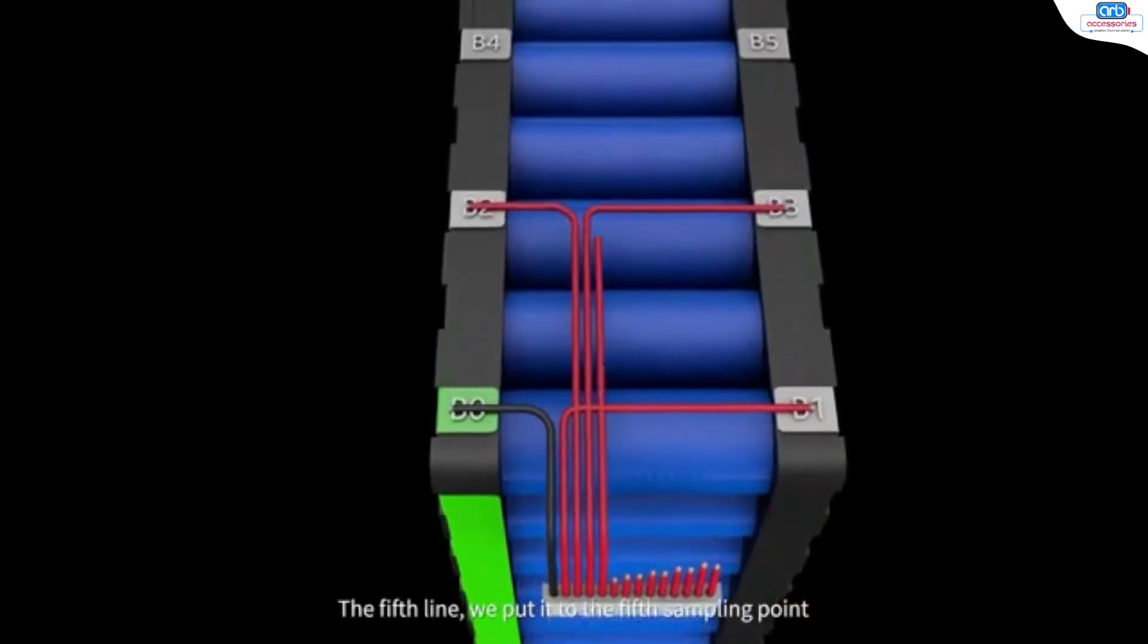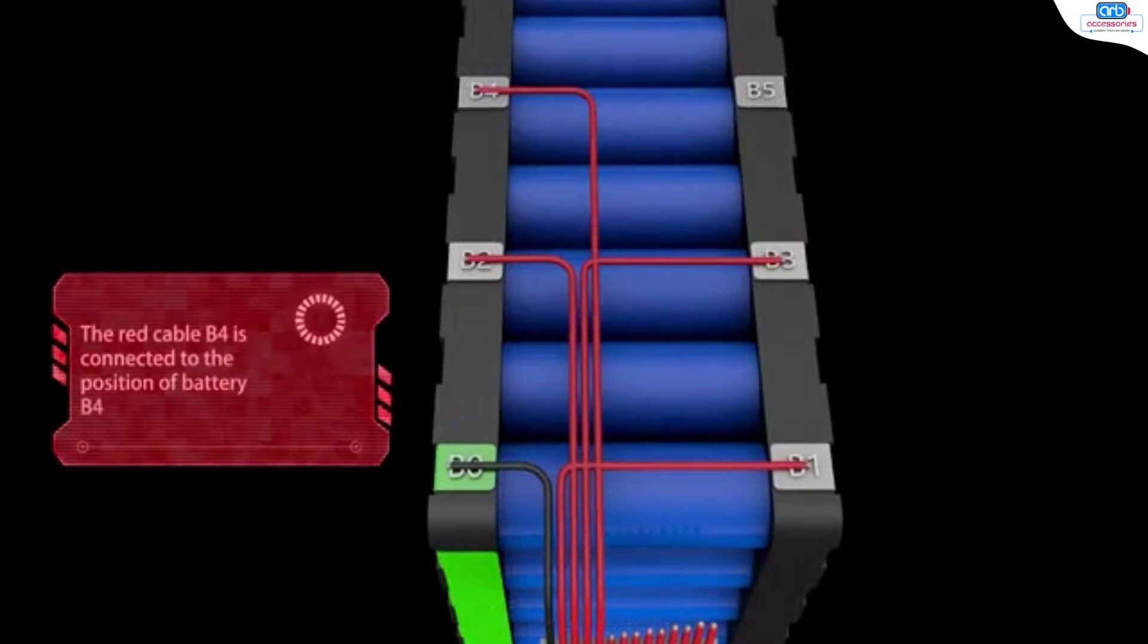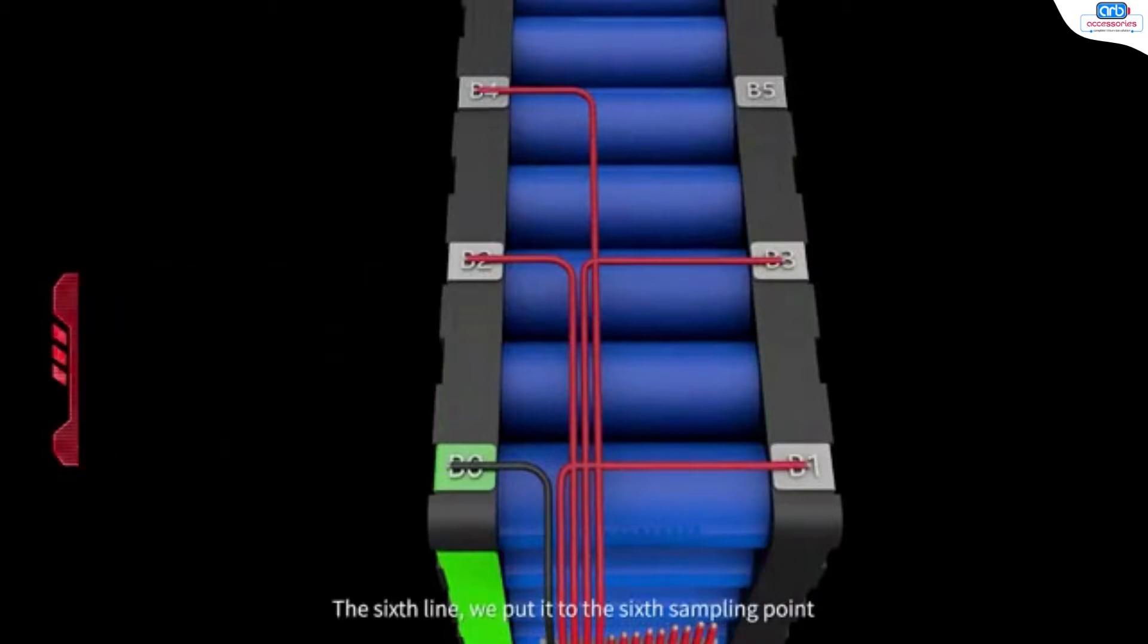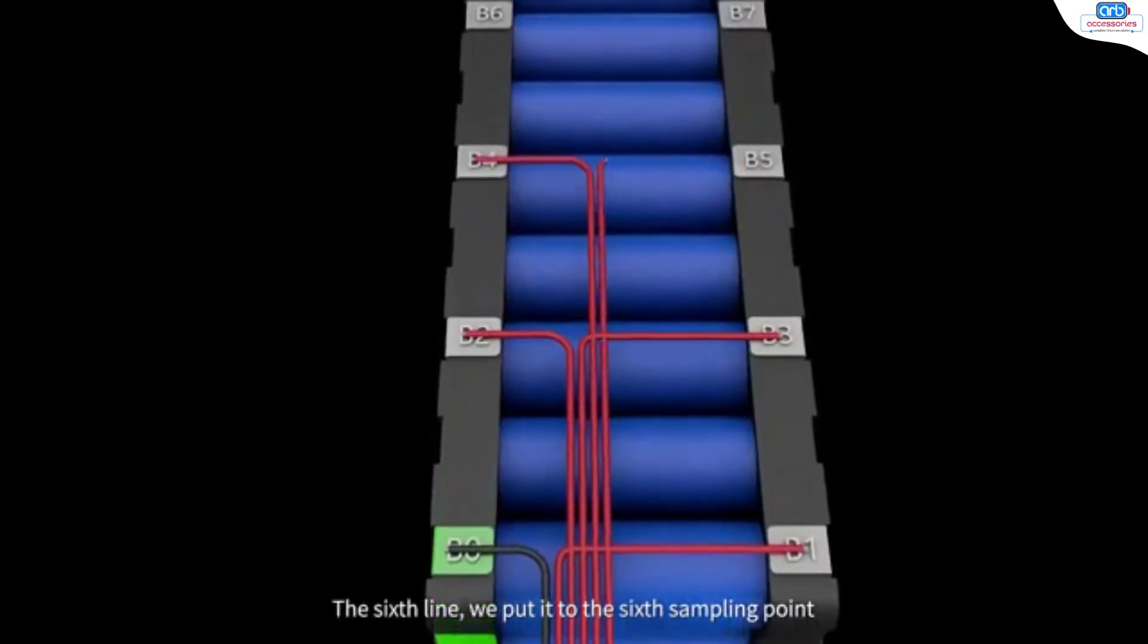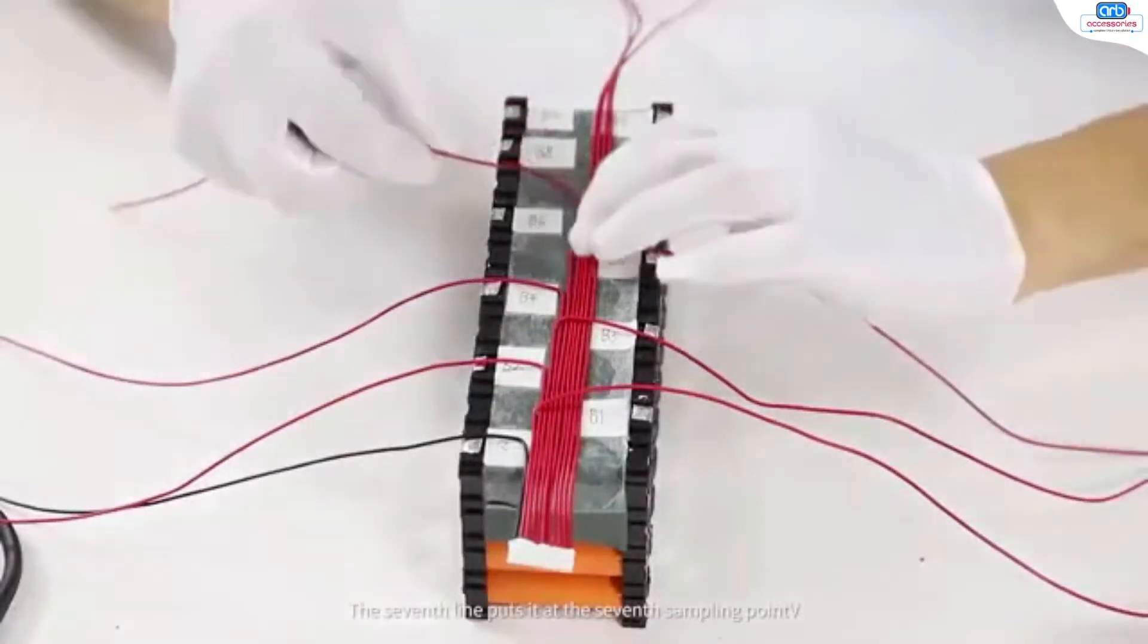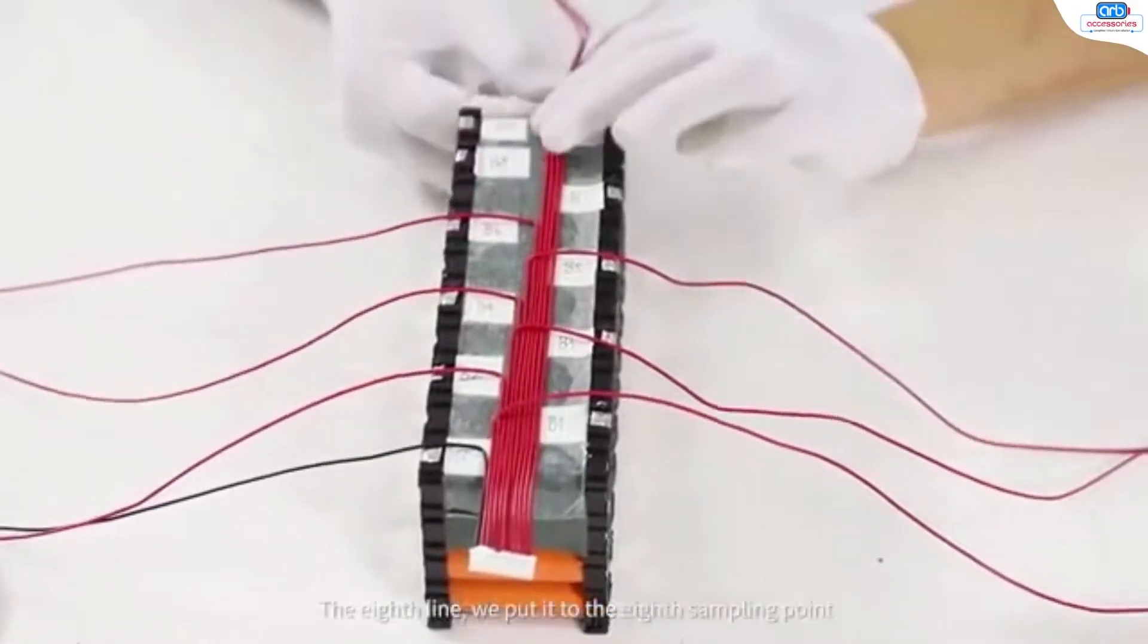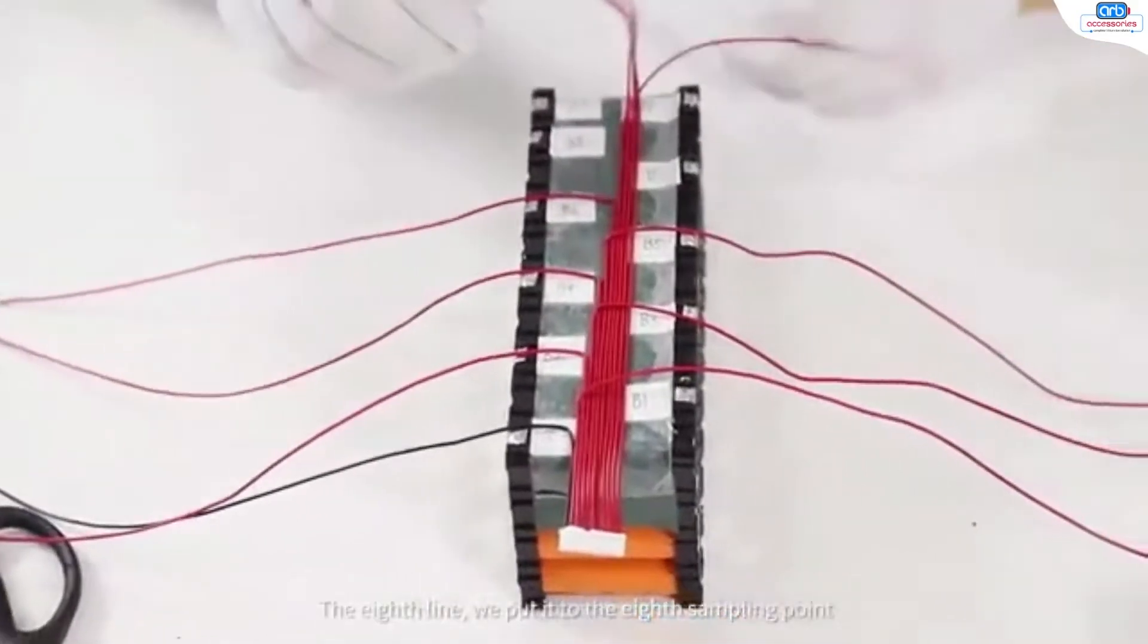The fifth line, we put it to the fifth sampling point. The sixth line, we put it to the sixth sampling point. The seventh line puts it at the seventh sampling point. The eighth line, we put it to the eighth sampling point.